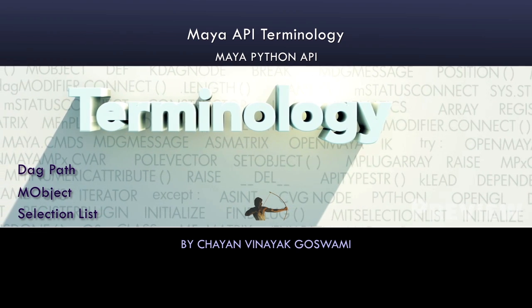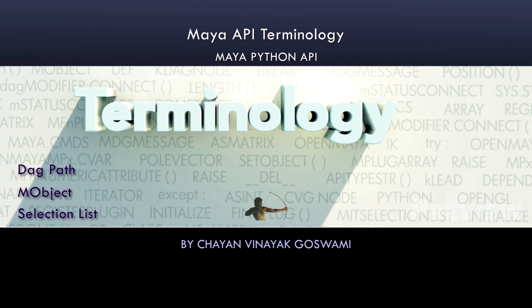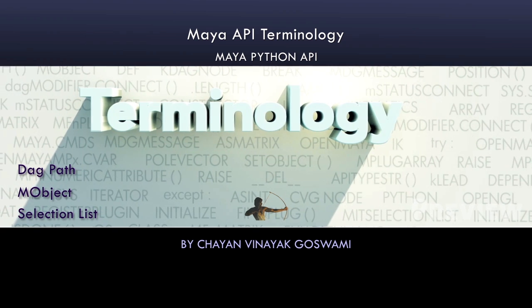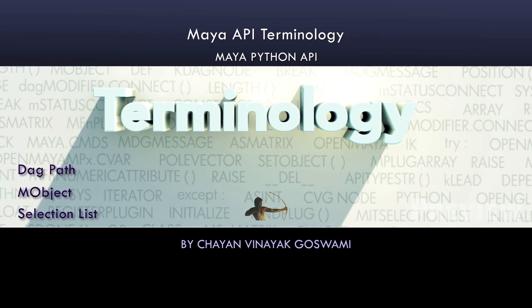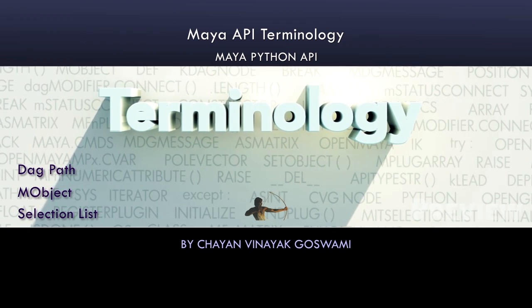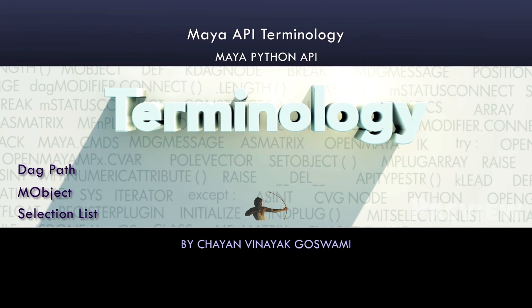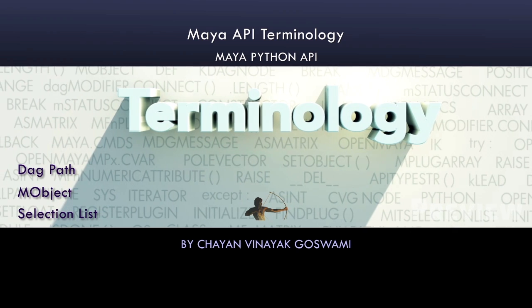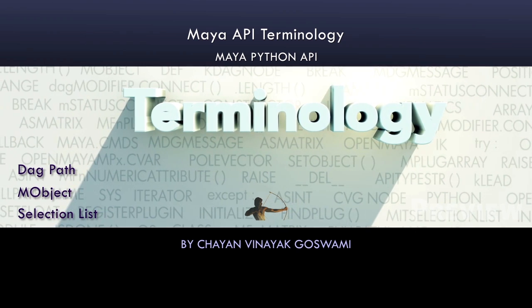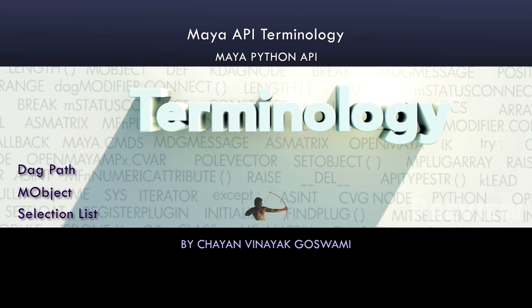Hello, my name is Shane Vinay Goswami and in this chapter we would understand a couple of terms related to open Maya and after that we would try to find the dag path of one of the objects from the Maya scene. At this point we don't know what is dag path but we would see. The first term here we are going to understand is DAG and the majority of the Maya scene architecture is based on DAG.